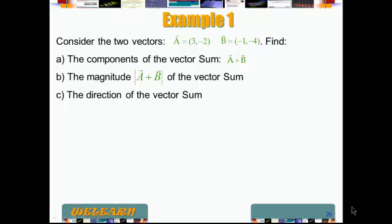Okay, let's work this example. We have two vectors, A=(3,-2) and B=(-1,-4), and they're asking us to find the components of the vector sum, the magnitude of the vector sum, and the direction of the vector sum.